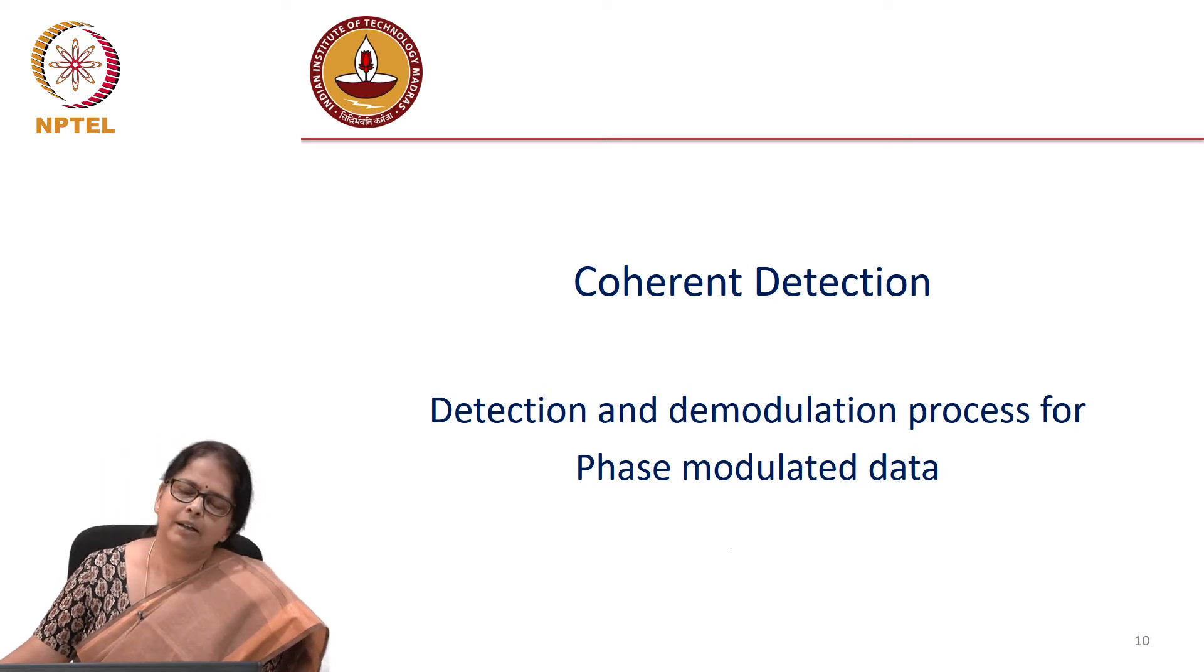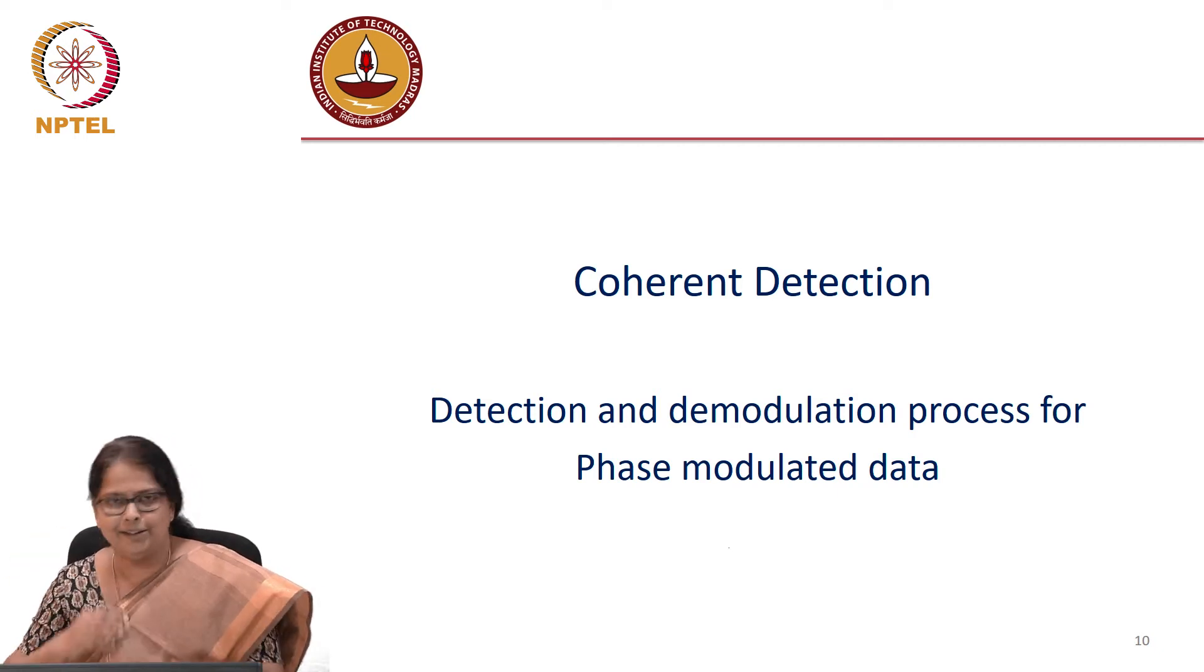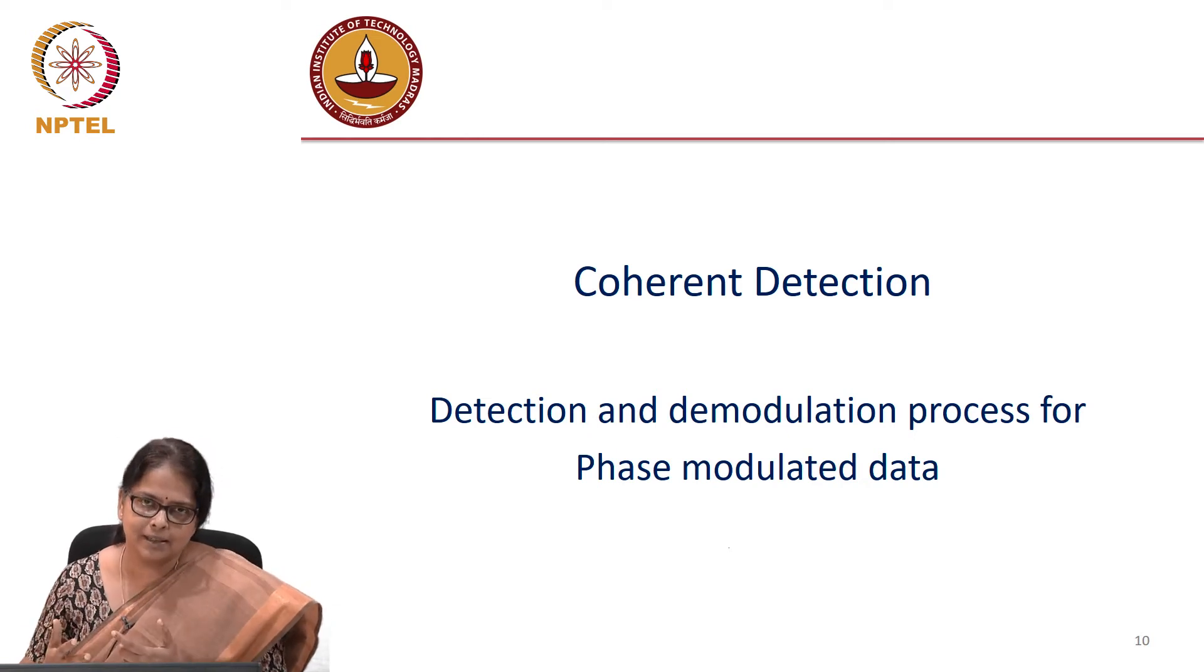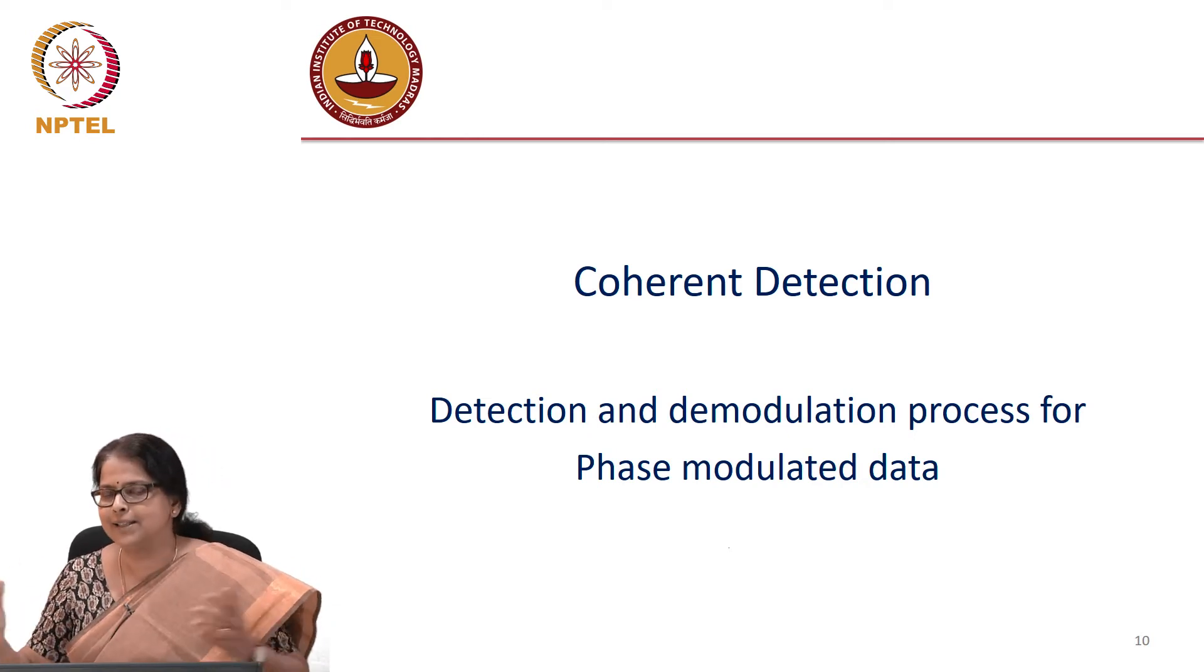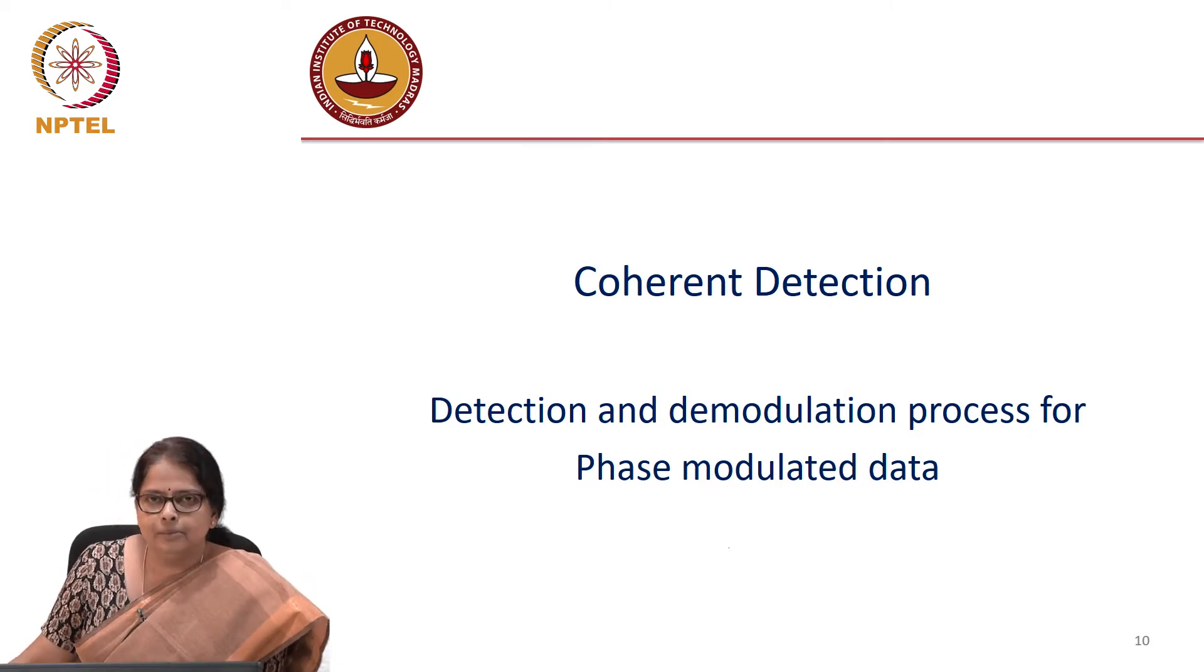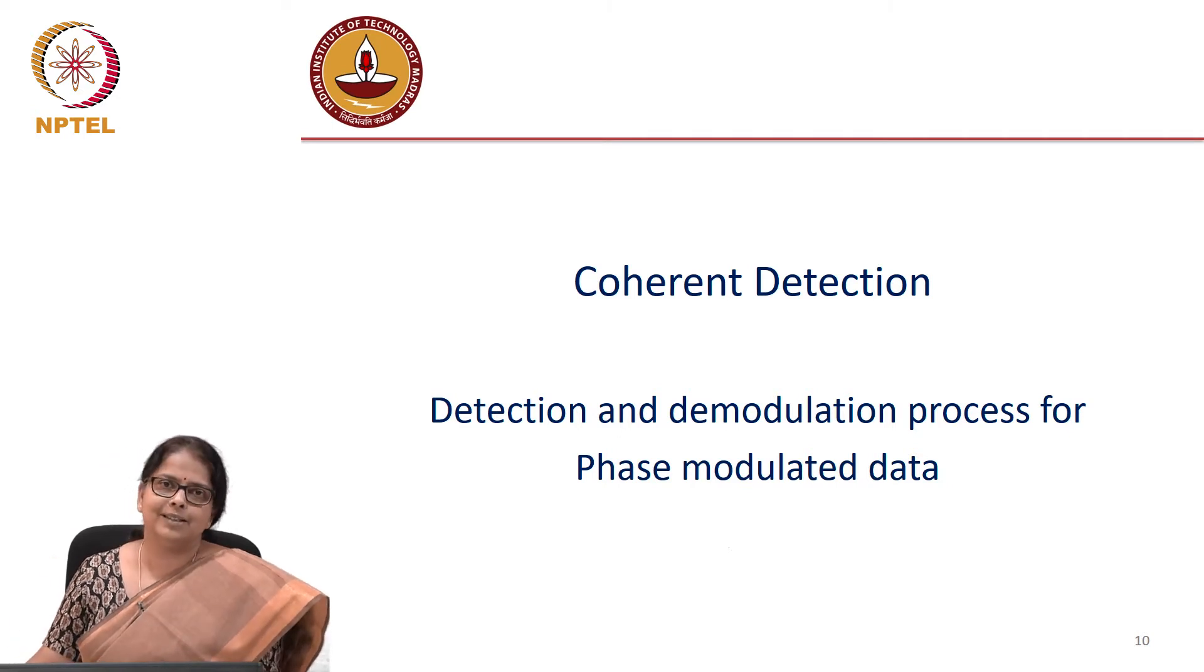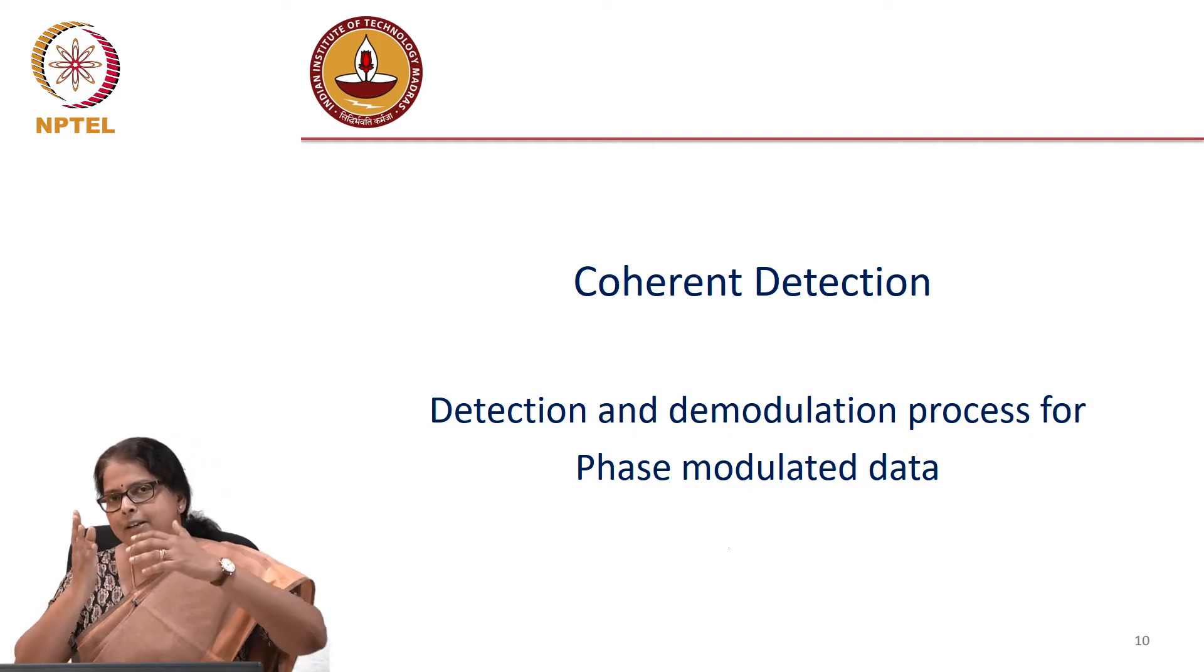We talked in detail about intensity modulation direct detection systems. When we talked about receivers, we also talked about the noise in a photodetector. We said that it is always good to operate in the shot noise or quantum noise limited system. And the way to do the quantum noise limited operation we said was to use what is called heterodyne detection. In fact, we talked about two types of coherent detection.